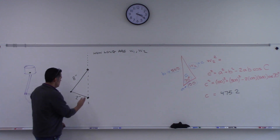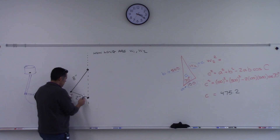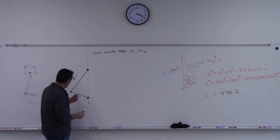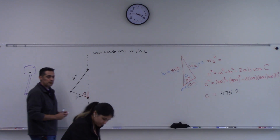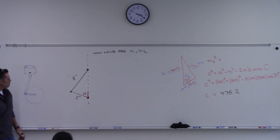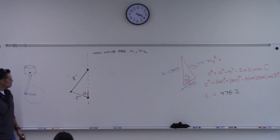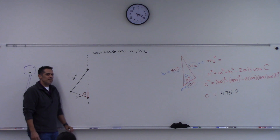Then we have the angle — the angle that this line makes relative to the circle. I'm going to call that angle theta. What type of triangle would I have here if theta was 90 degrees?